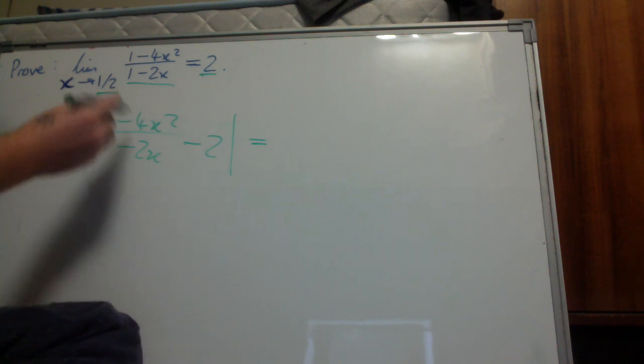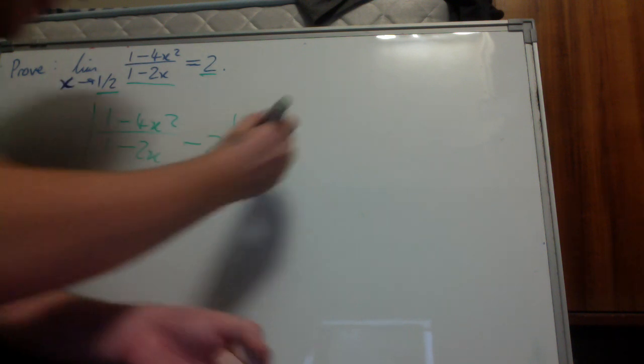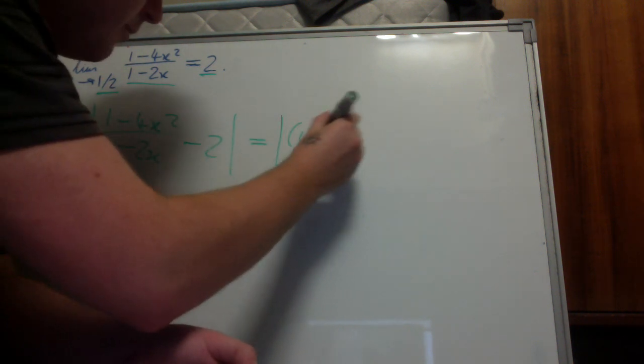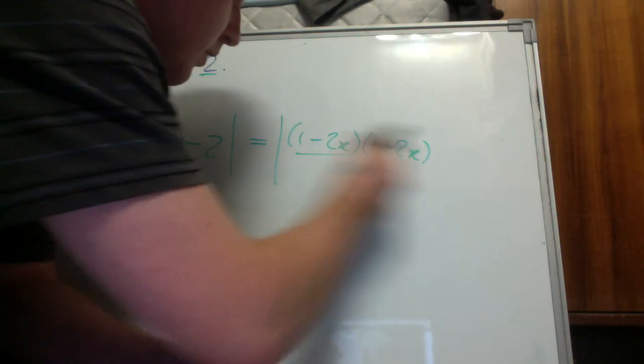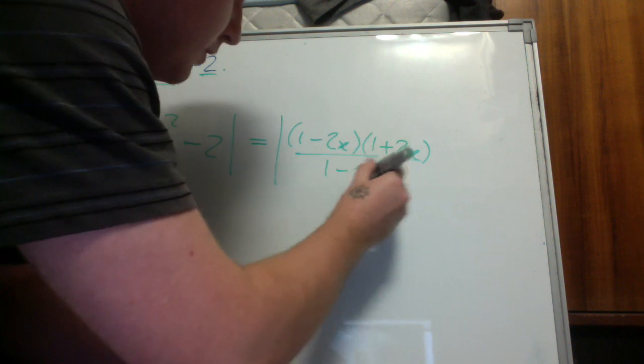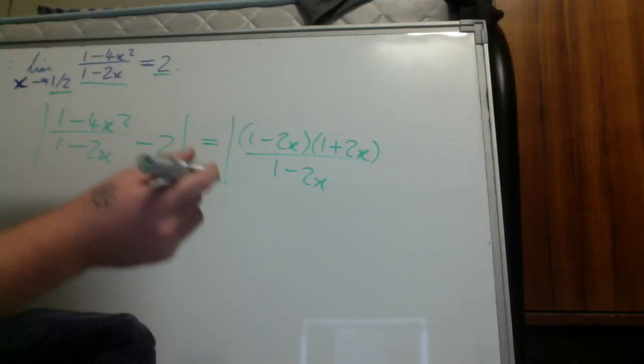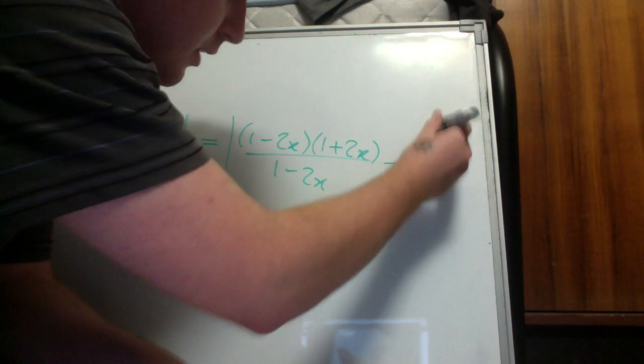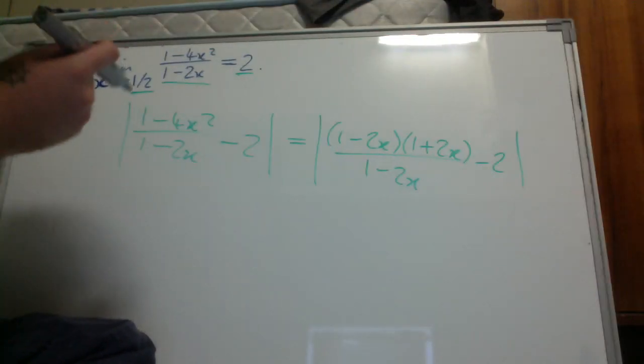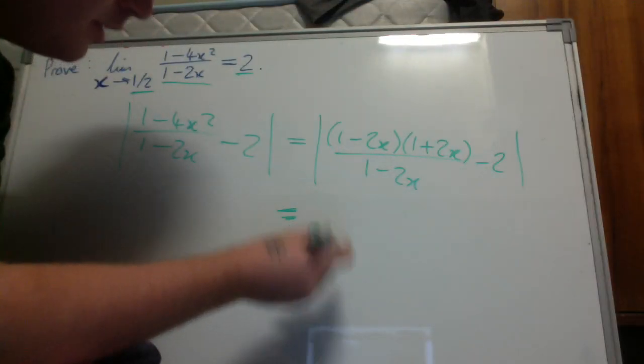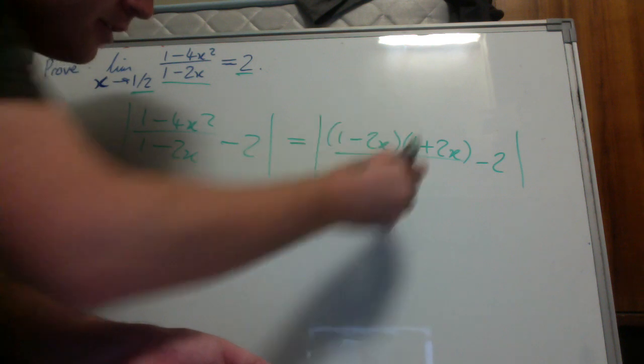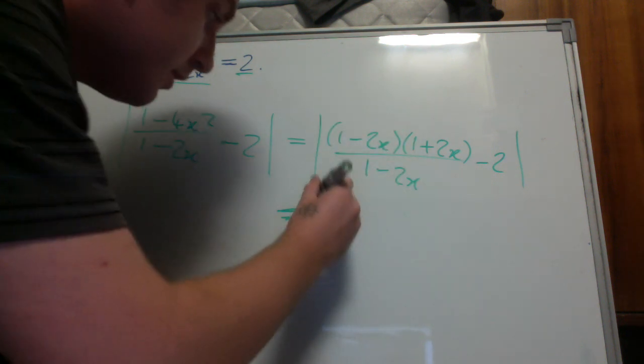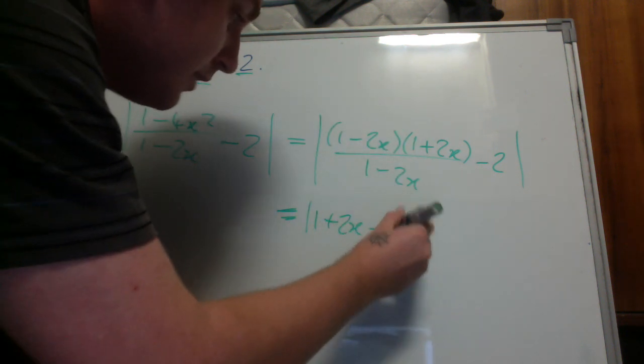Factoring by difference of two squares we get |(1 - 2x)(1 + 2x) / (1 - 2x) - 2|. Because the denominator never actually equals zero, we can cancel it out, so you get |1 + 2x - 2| = |2x - 1|.